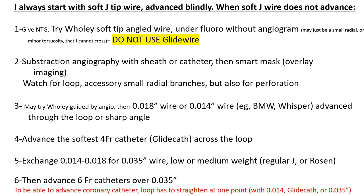Also, it may not go — the Amplatz super stiff — through that soft glide cath, or it may even kick it backward. So then over that O35-inch wire, I advance my coronary catheters.